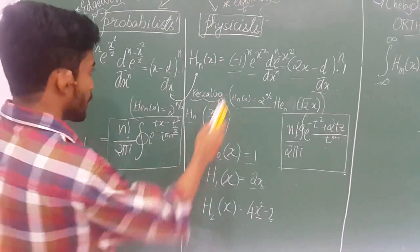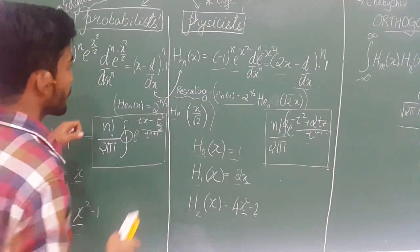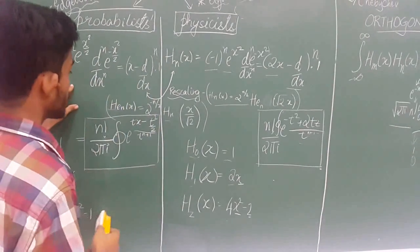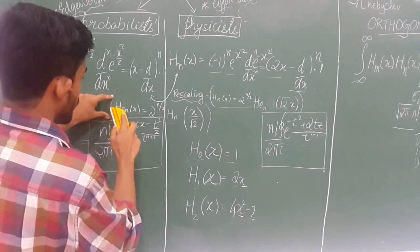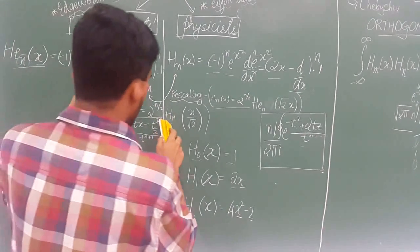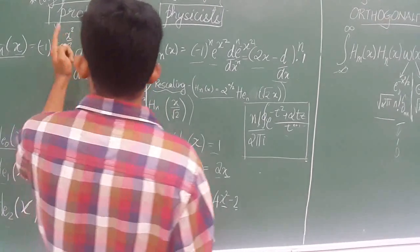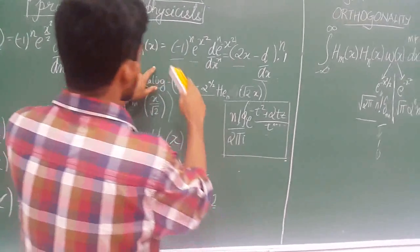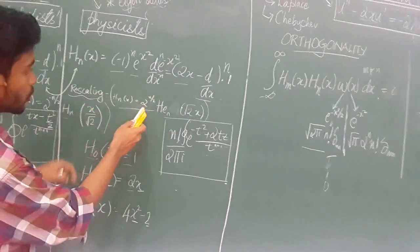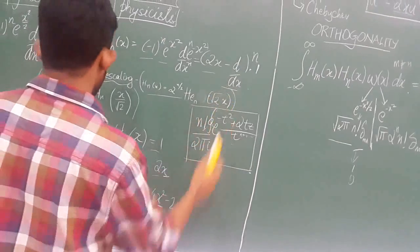Hermite polynomials can be rescaled into each other. Physicist Hermite polynomials can be converted into probabilistic Hermite polynomials using H_n(x) = 2^(-n/2) × H_n(x/√2). And probabilistic Hermite polynomials can be converted into physicist Hermite polynomials using H_n(x) = 2^(n/2) × H_n(√2 · x).